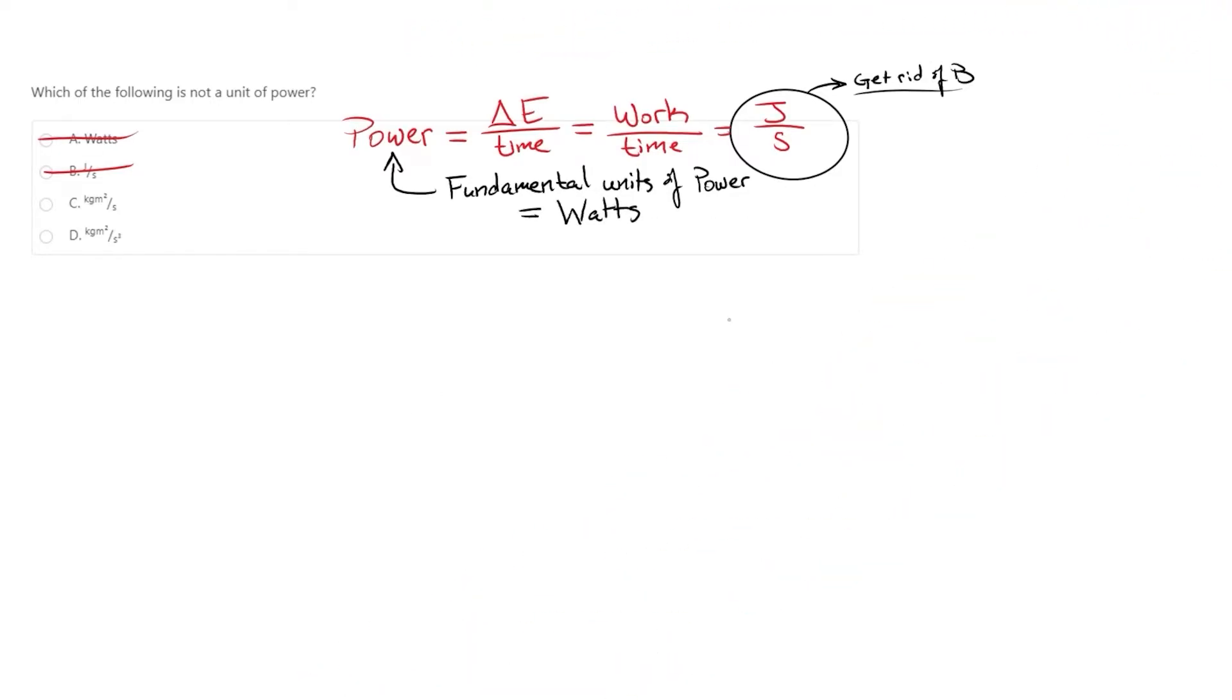The same reductionist approach can be applied to the joule. Take the work equals force times distance equation, for instance. Since joules are the units of work, this equation lets us break joules down into newtons and meters, which are the units for force and distance, respectively.